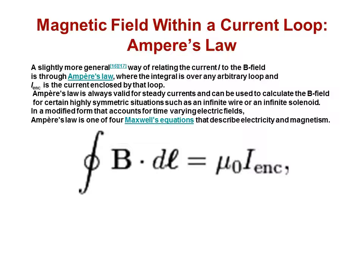Ampere's law is always valid for steady currents and can be used to calculate the B field in certain highly symmetrical situations, such as an infinite wire and infinite solenoid. In a modified form that accounts for time-varying electric fields, Ampere's law is one of four Maxwell's equations that describe electricity and magnetism. A remarkable achievement to that story.